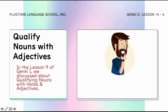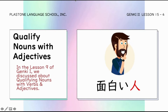For example, gamitin natin ang hito or person as reference na noun. So instead of just saying person or hito, gagamit tayo ng adjectives or verbs para i-describe kung anong klaseng tao ito. Unahin natin ang e-adjective. For example, omoshiroi hito — instead of just saying hito or person, sinabi natin na a person who is interesting.